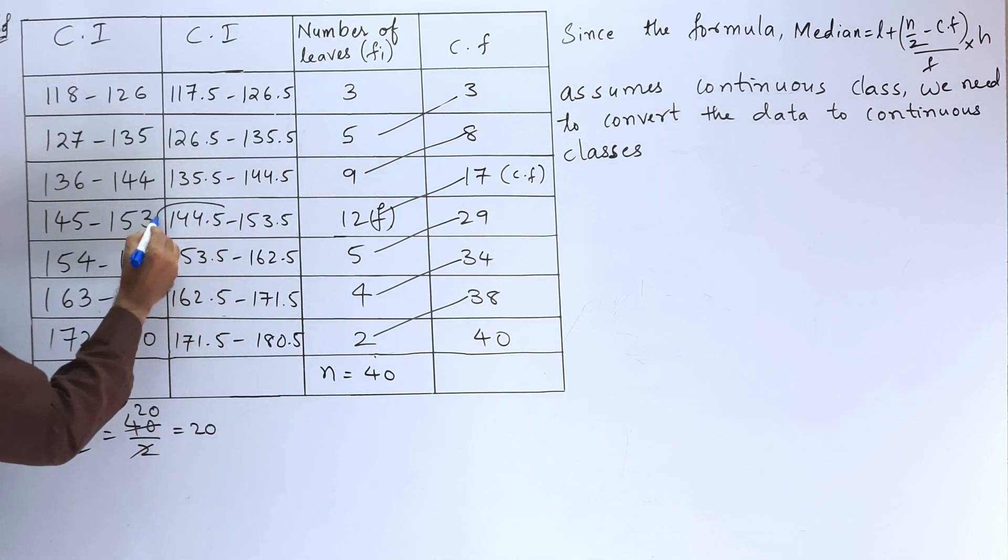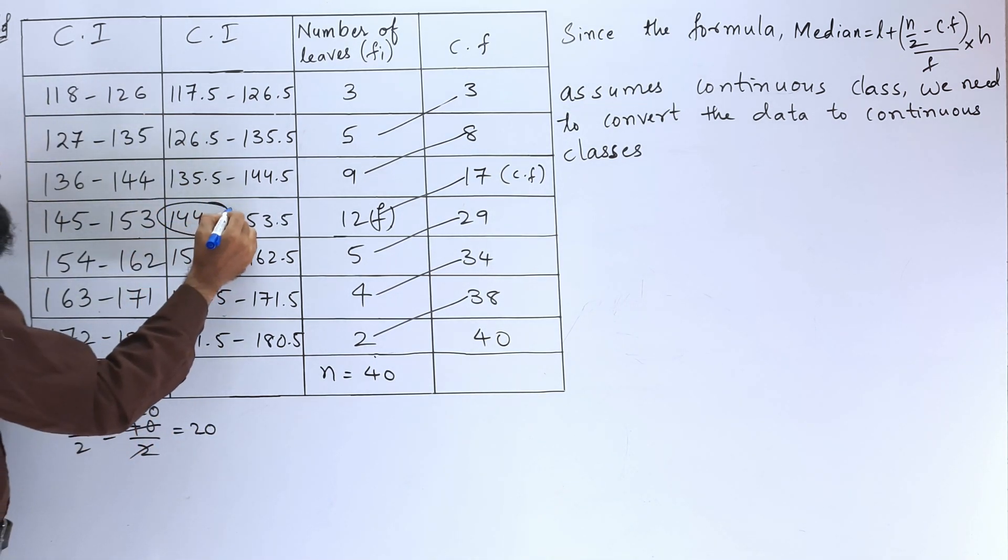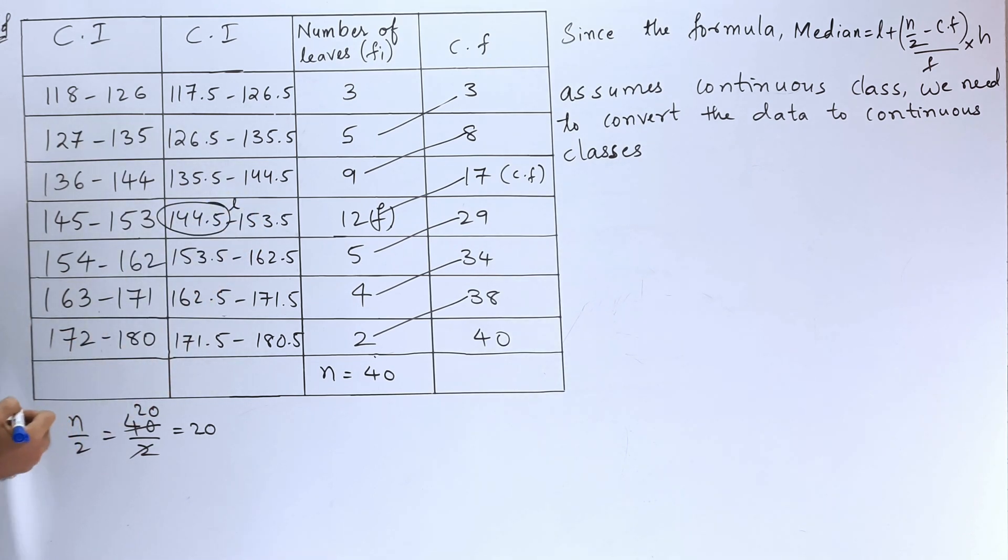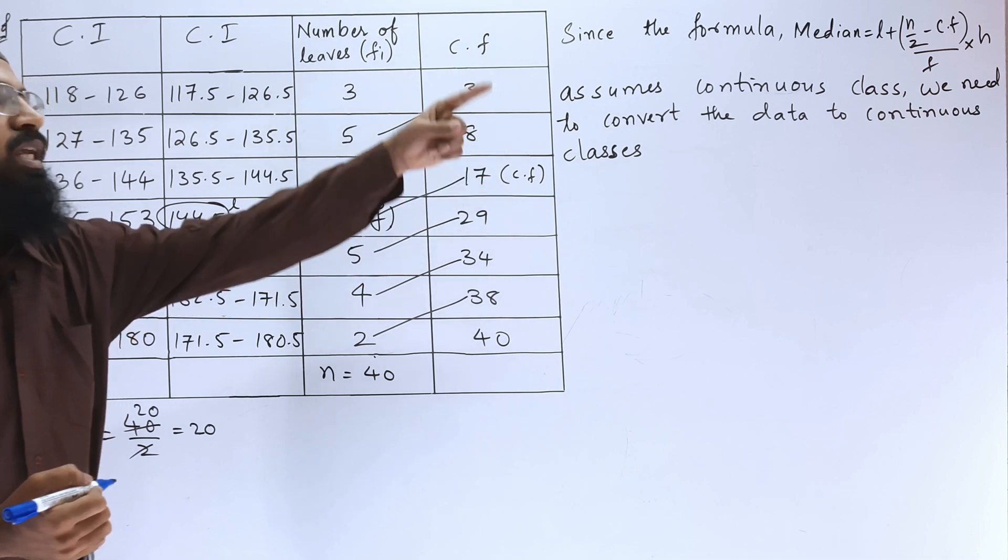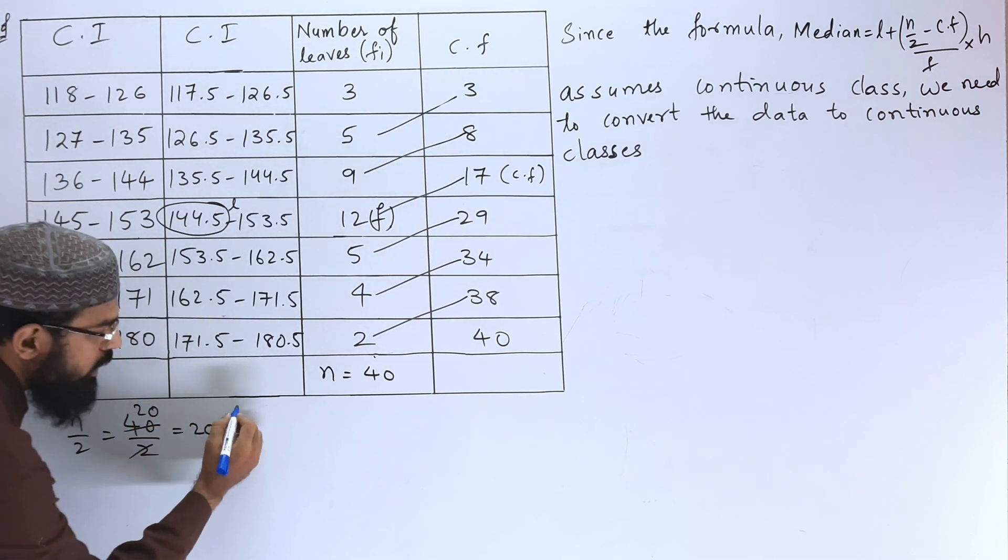Let us write here F and the class and the cumulative frequency preceding the median class that will be Cf. Here the lower limit is 144.5, so let it be L. We have got L, F and Cf. Next is the class size, that is H.